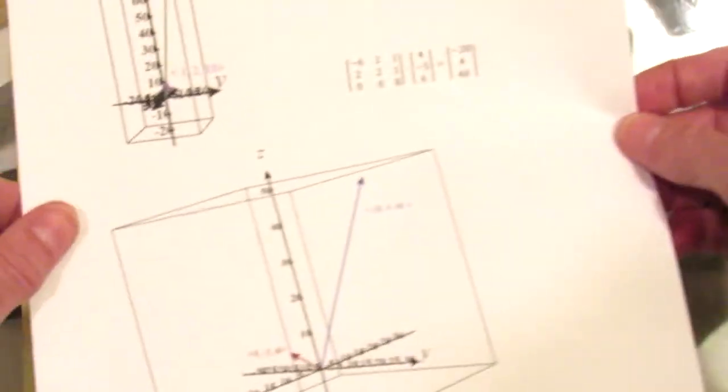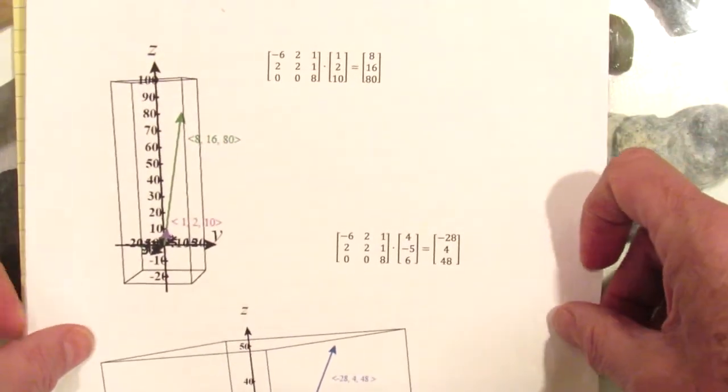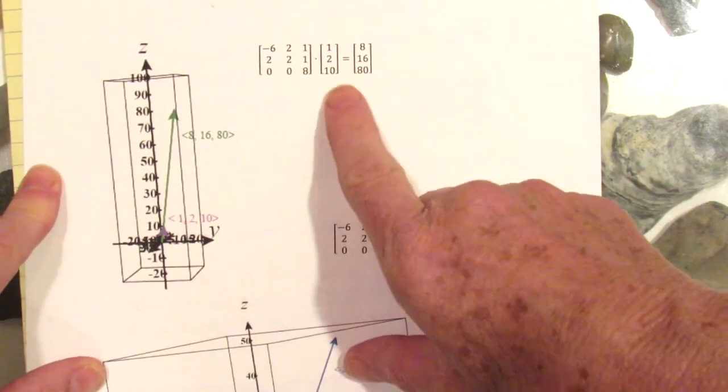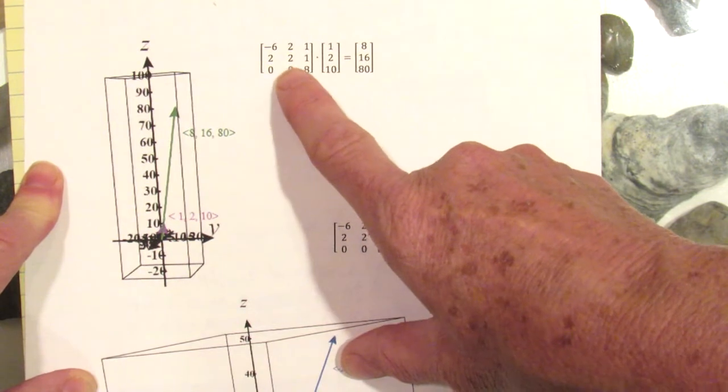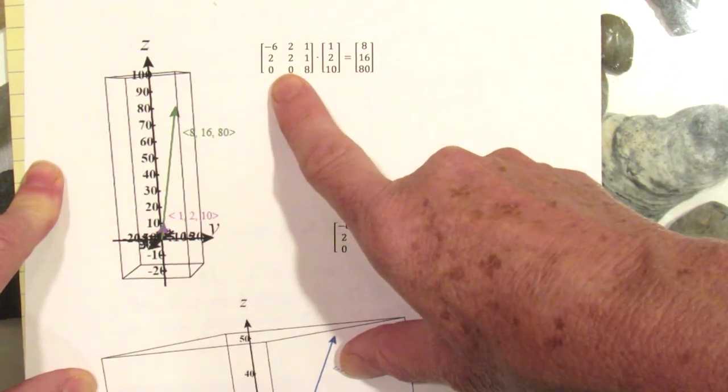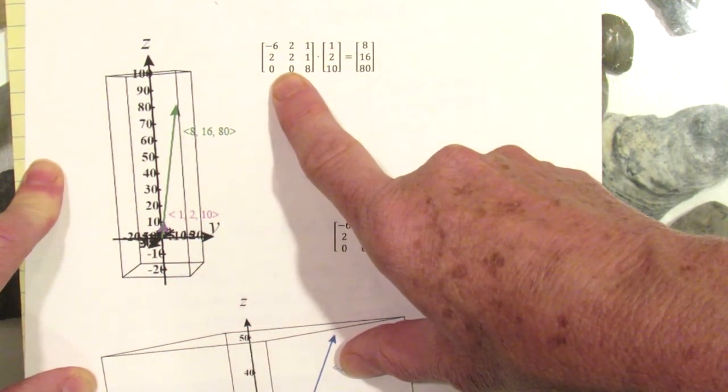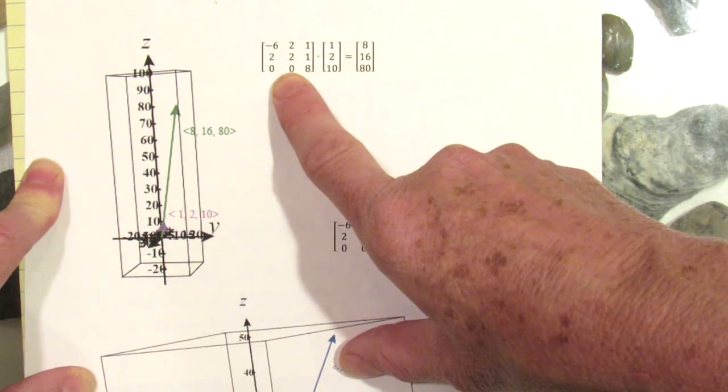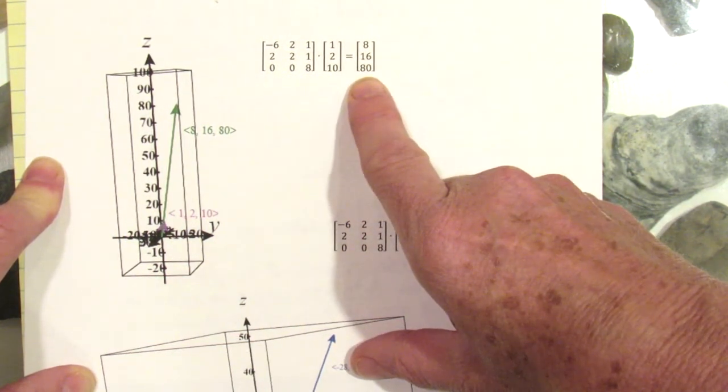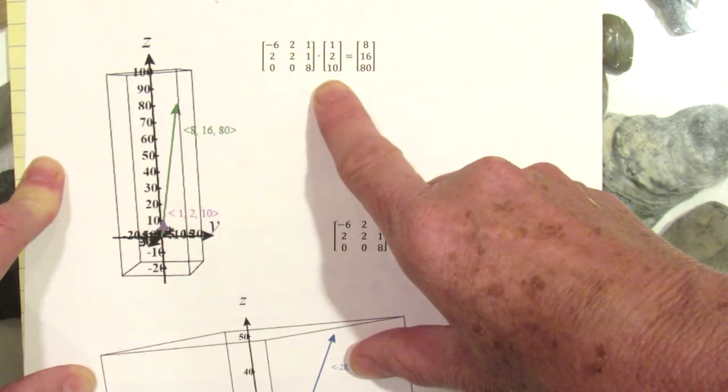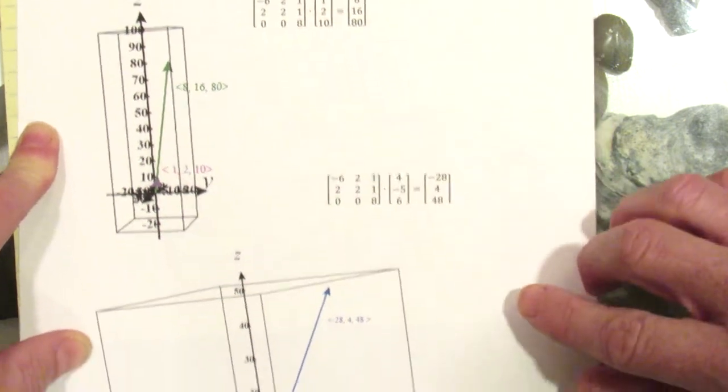Now a visual for what is going on: if a vector is an eigenvector, it means that this matrix keeps any vector on its span, meaning the line that contains that vector. So notice [8,16,80] is in line with [1,2,10].